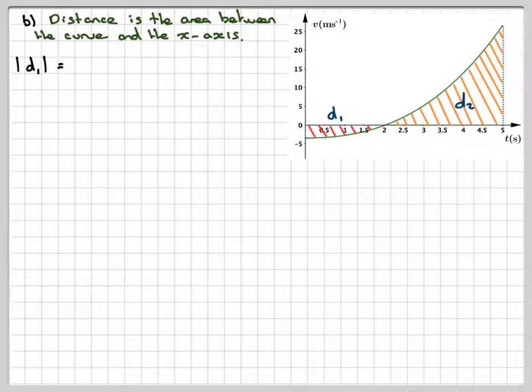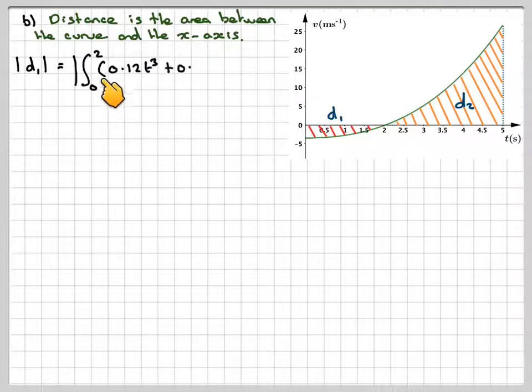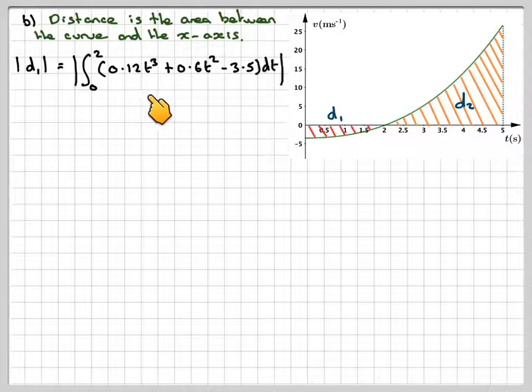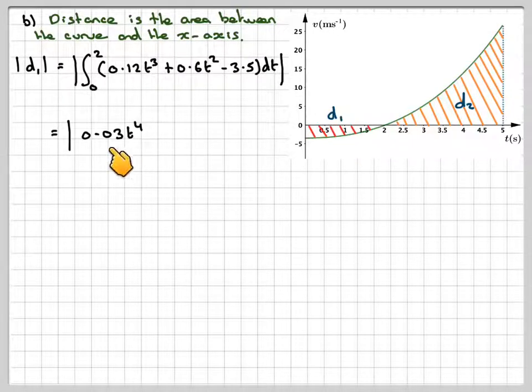Now the absolute value of d1, because I know that's negative, is going to be the absolute value of the integral from 0 to 2 of 0.12t cubed plus 0.6t squared minus 3.5 dt, which is the absolute value integrating now.